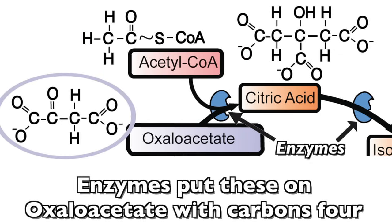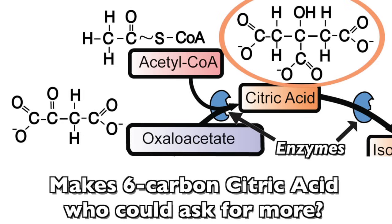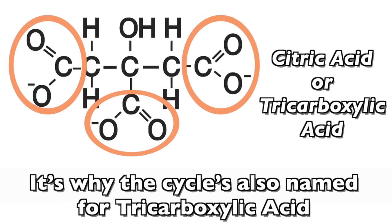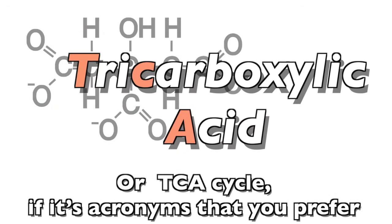Enzymes put these on oxaloacetate with carbons 4, make 6-carbon citric acid, who could ask for more? Notice 3 carboxyl groups on the citric acid, it's why the cycle's also named for tricarboxylic acid or TCA cycle.